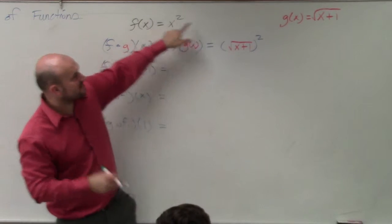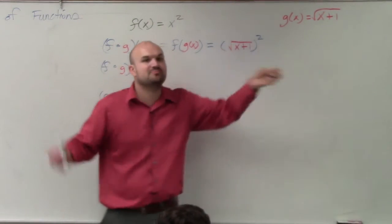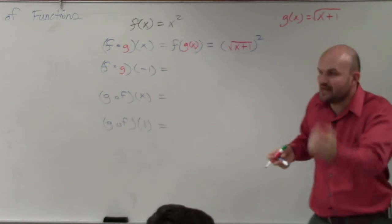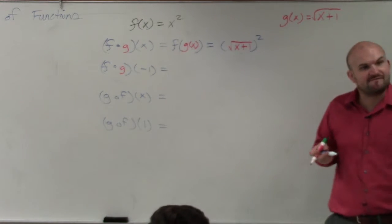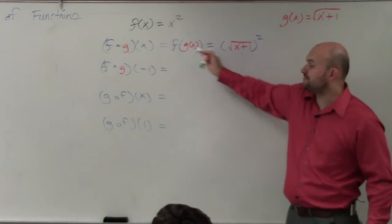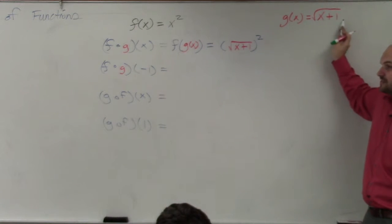Does everybody see what I did? Instead of using x, I'm using g of x. I'm replacing the input variable. Instead of with a number, I'm replacing it with a function. And the function g of x has a rule, which is square root of x plus 1.